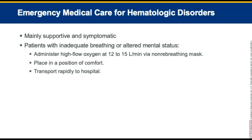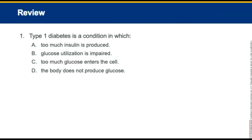Emergency care for hematologic emergencies is mainly supportive and symptomatic. For patients with inadequate breathing or altered mental status, administer high-flow oxygen at 12 to 15 liters, place them in a position of comfort, and transport rapidly to the hospital. This concludes Chapter 20, Endocrine and Hematologic Emergencies of the Emergency Care and Transportation of the Sick and Injured, 12th edition.